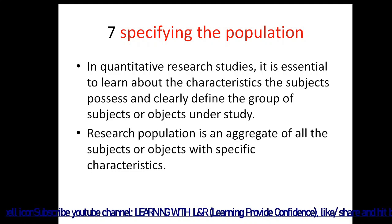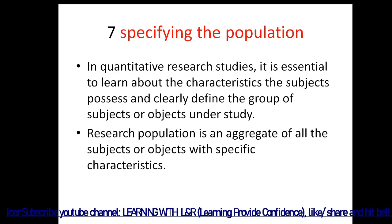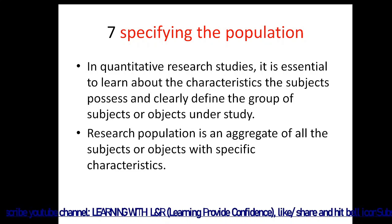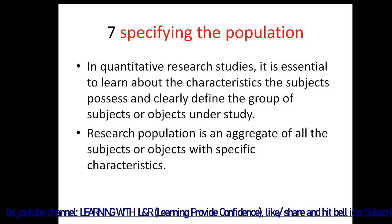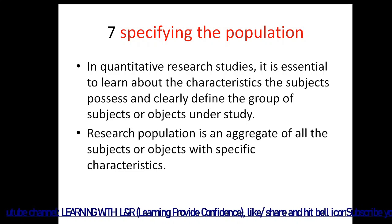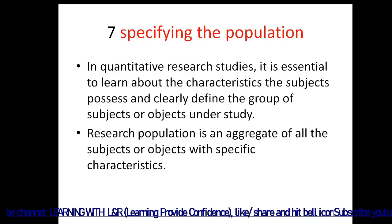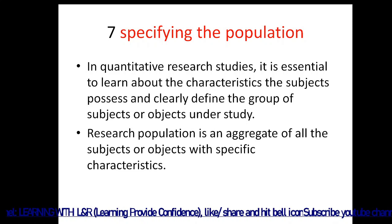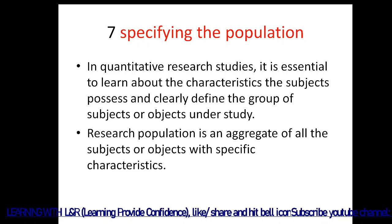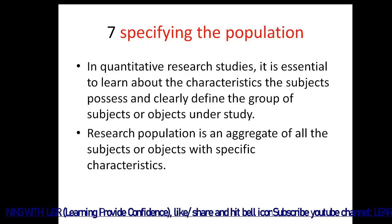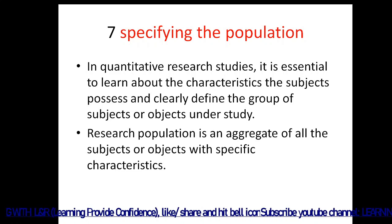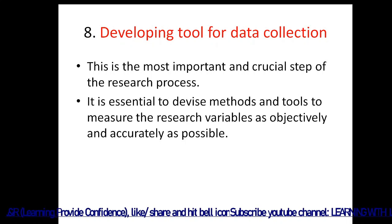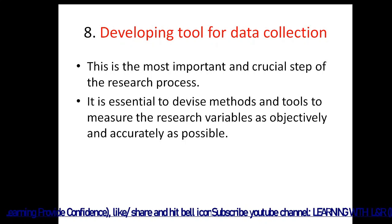The next step is specifying the population. In quantitative research it is essential to know the characteristics that subjects must possess and to clearly define the group under study. A research population is an aggregate of all subjects or objects with specific characteristics fixed by the researcher — the population selected must possess those particular characteristics.